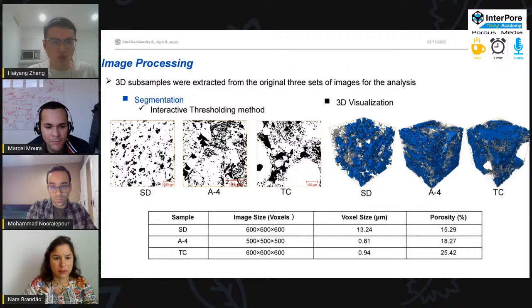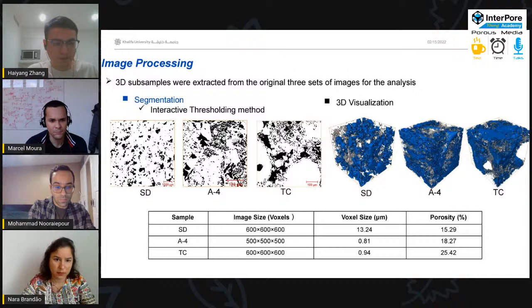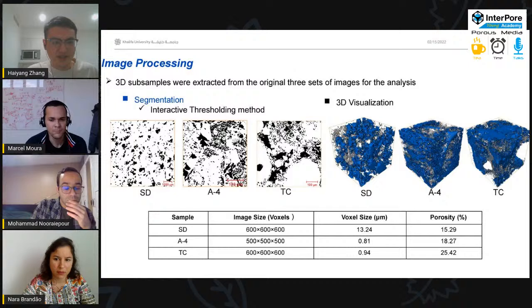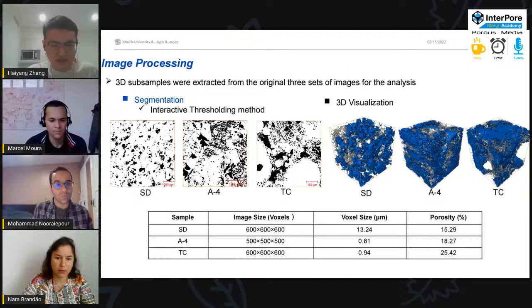So we extract some samples from the original three sets of the images. And the below table shows the properties, including the image size, the resolution, the porosity. Then we use the iterative thresholding method to segment the images. The first three images are the segmented images, where the black represents the pore space, and the whites are the solid phases. And the last three images are the 3D visualization of the selected domains, where the blue color represents the connected pore space, and the green color represents the unconnected pore space.